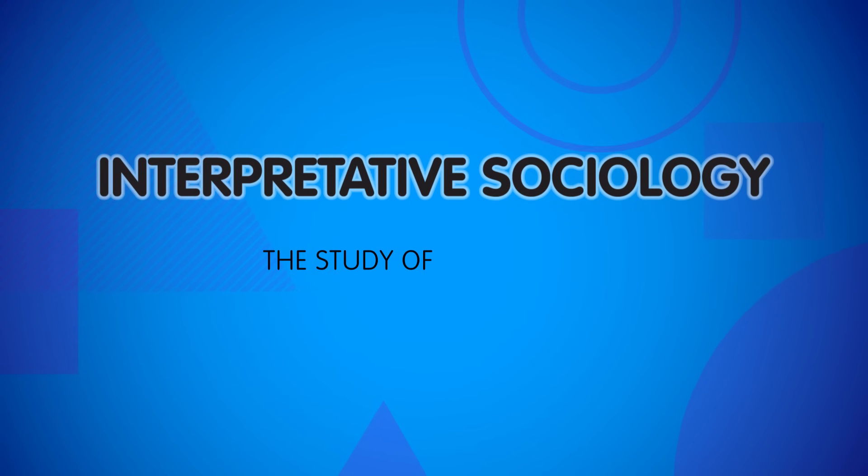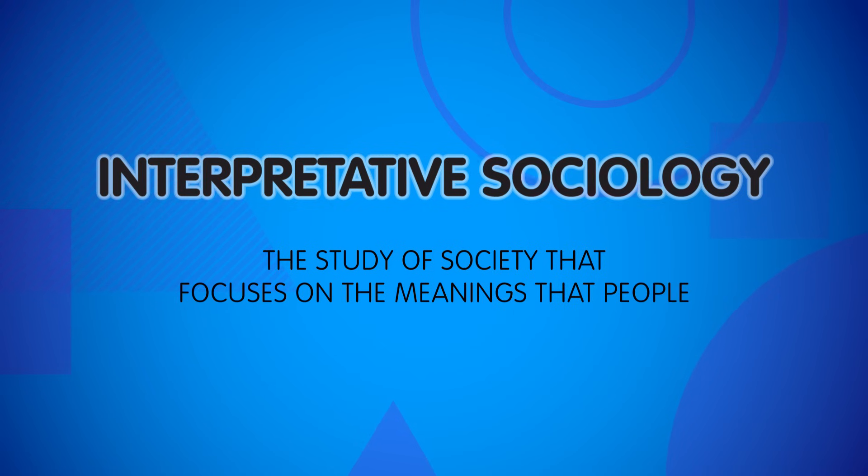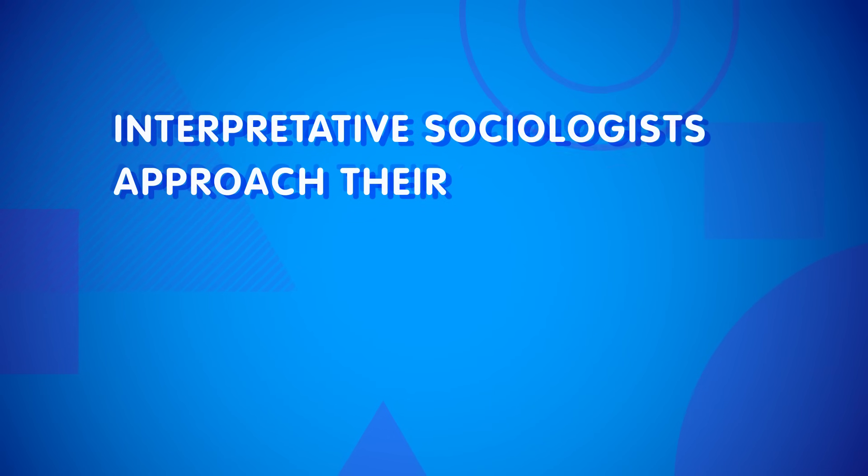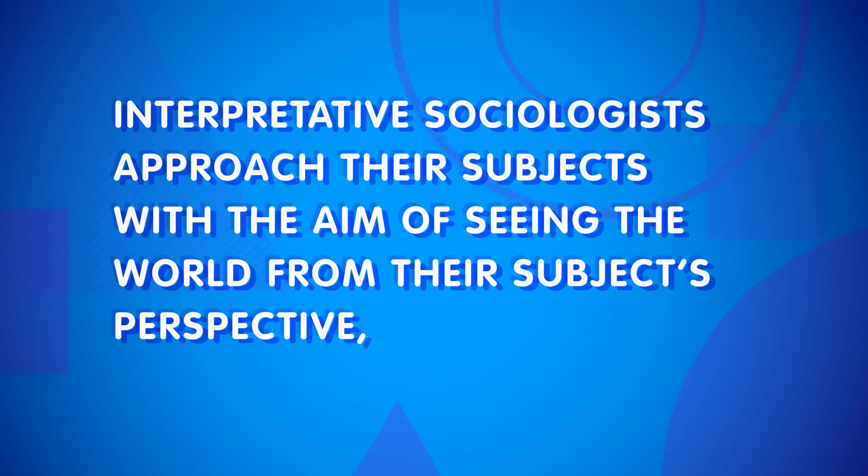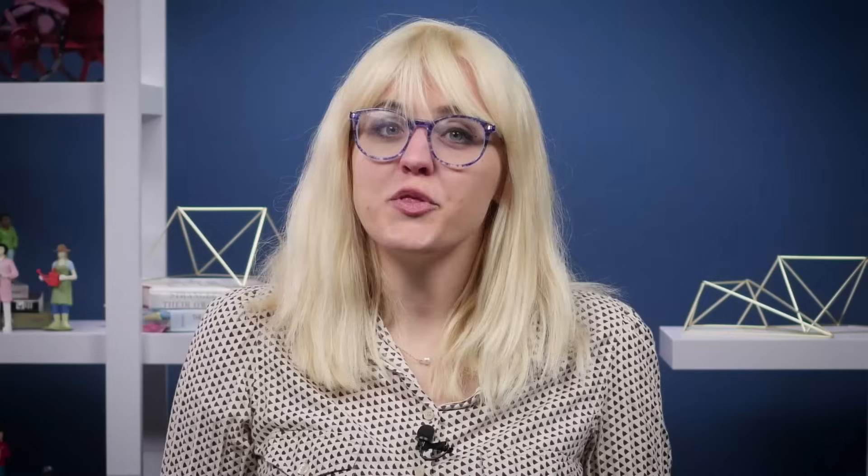And this brings us to another way of doing sociology. Interpretive sociology is the study of society that focuses on the meanings that people attach to their social world. While positivist sociology is more interested in whether a person acts a certain way — something you can see as an outside observer — interpretive sociology asks: why this behavior? What's the meaning behind it? And how do people view their own actions and thoughts? Interpretive sociologists approach their subjects with the aim of seeing the world from their subjects' perspective, rather than through quantitative data, often using interviews or face-to-face interactions.